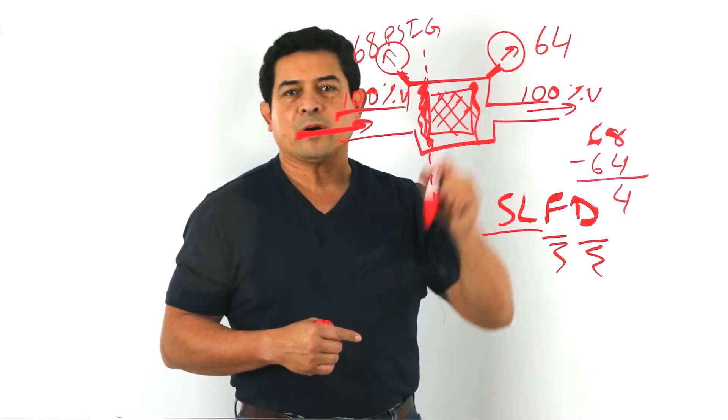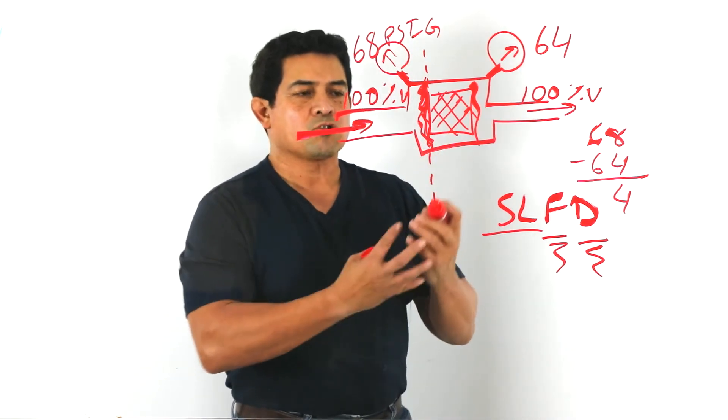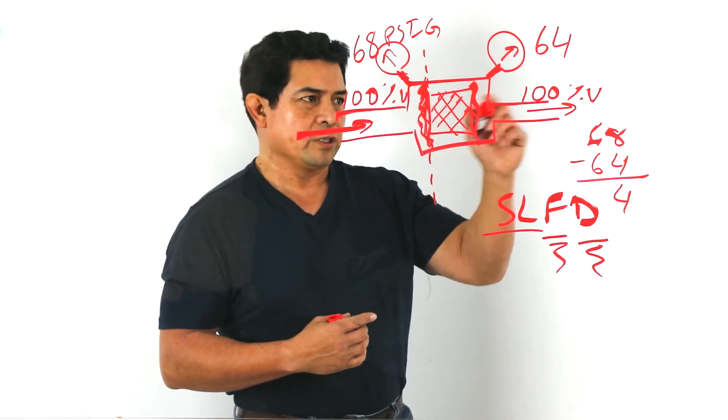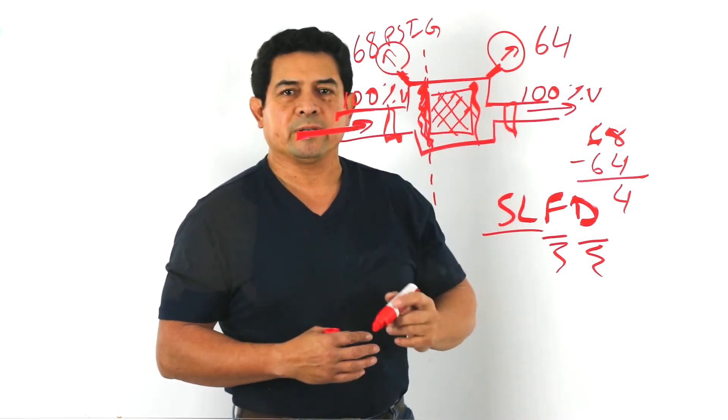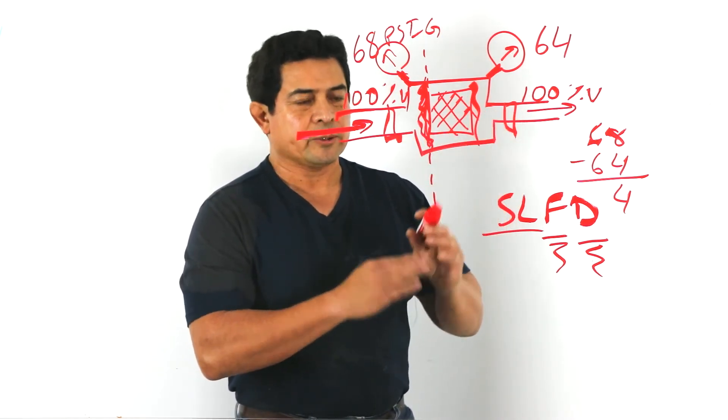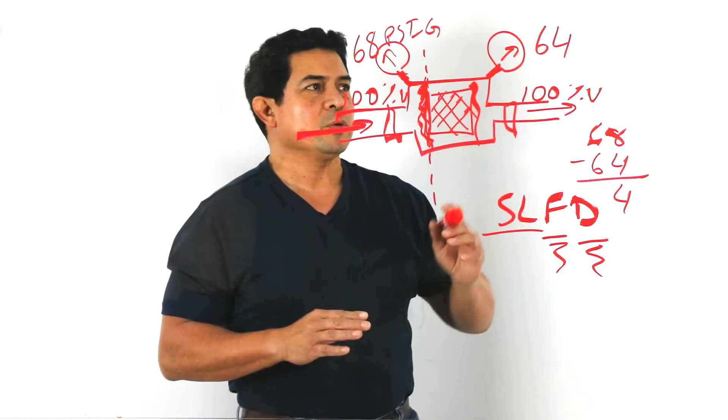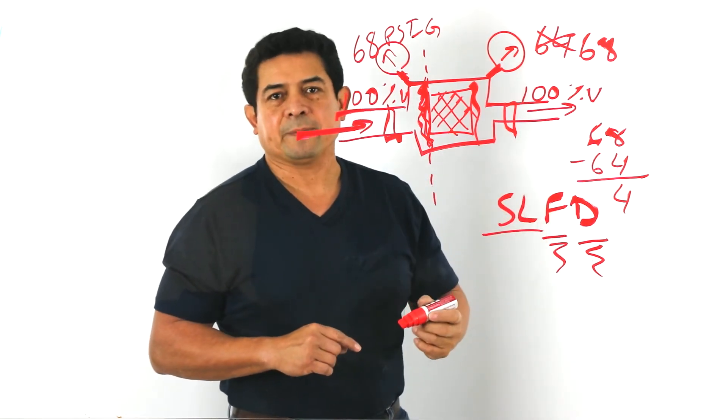Because we have the pressure difference, we know that this dryer is bad. This dryer needs to be replaced. So now what we can do is just cut the dryer out and put a new one in. There's more to it than just that, but we need to replace this and put a new one in. Once we put a new one in, we're going to notice that now both pressures will be the same.